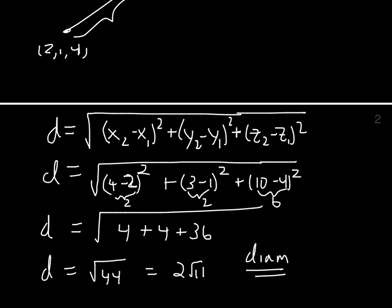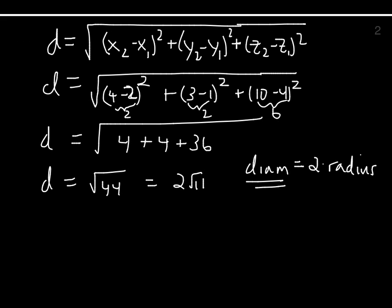The diameter is twice the radius, so we'll take half of that. The radius then is 2√11 divided by 2, which is √11.